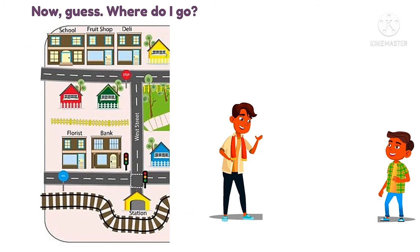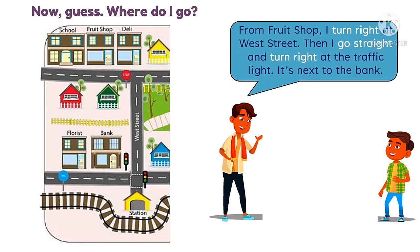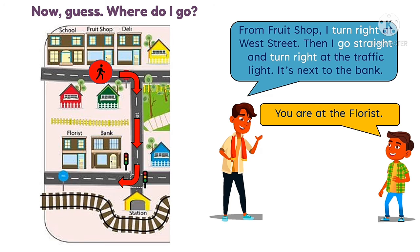Now guess — where do I go? From the fruit shop, I turn right at West Street, go straight, go straight, go straight, and turn right at the traffic light. It's next to the bank. You are at the florist!